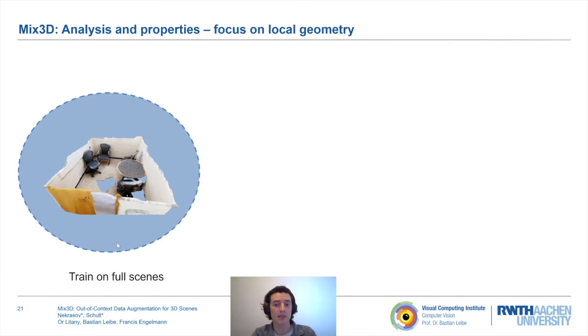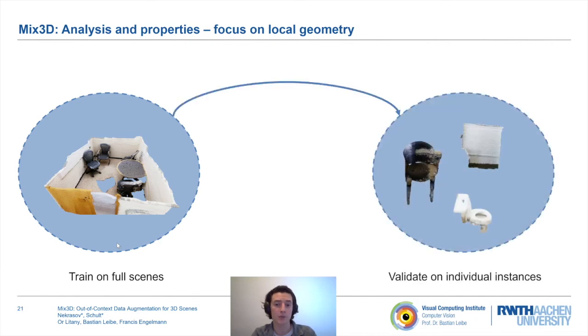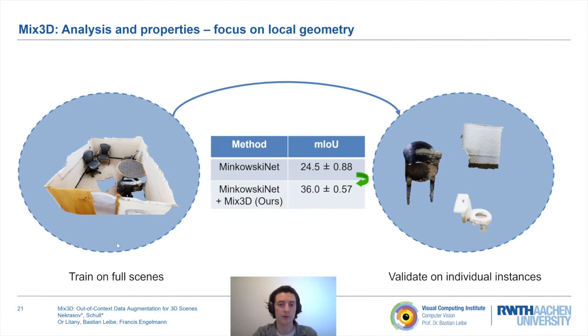In this experiment, therefore, shows how much the model depends on the contextual information, and how much it can make use of local geometry. From this experiment, we learn two important takeaways. First, the scores on single instances are overall substantially lower compared to evaluating scenes. This indicates the great importance of global context. Secondly, Mix3D performs drastically better on single instances than models trained without Mix3D. We conclude that Mix3D trained models are notably less dependent on global context to make accurate predictions.